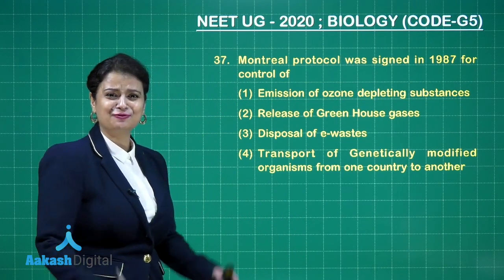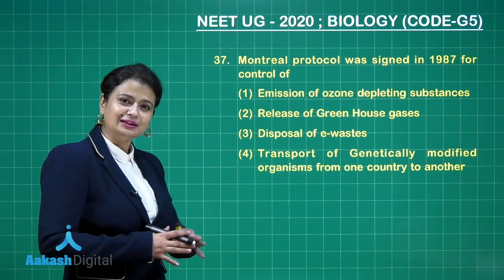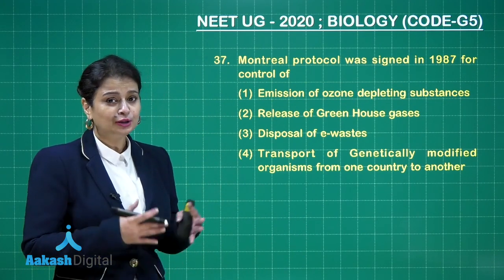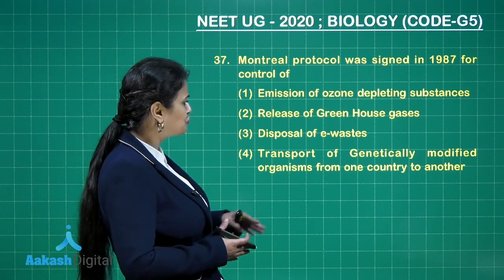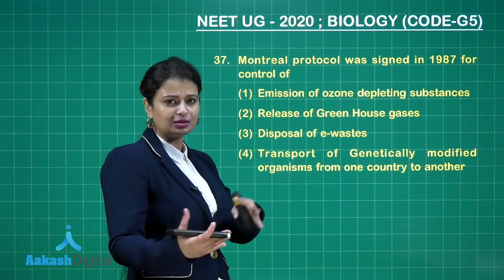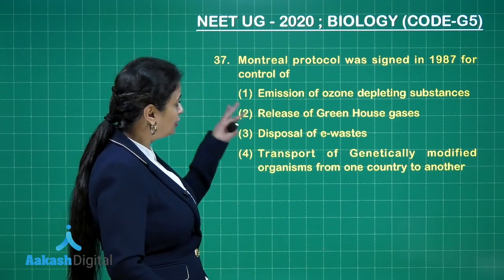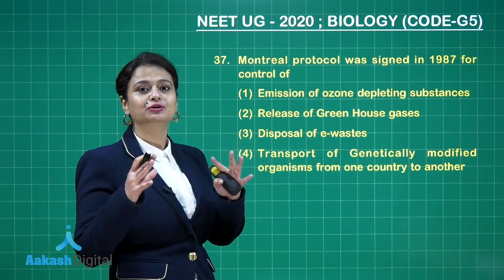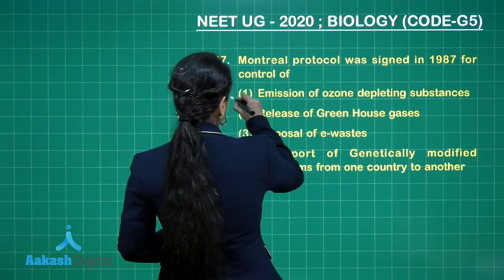Another question from the chapter Environmental Issues. We have discussed two important protocols: Montreal and Kyoto. The Kyoto Protocol was signed in 1997 for control of the release of greenhouse gases, which lead to global warming. The Montreal Protocol is for control of emission of ozone-depleting substances like chlorofluorocarbons. So the right answer here is option number one.